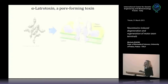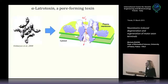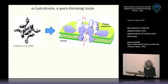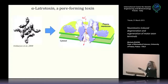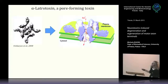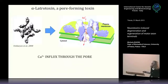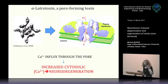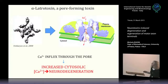Latrotoxin is the main component of the venom of the black widow spider. It is a typical pore-forming toxin that targets the presynaptic nerve terminal and inserts into the lipid bilayer by forming a tetramer. This tetramer makes a pore permeable to cations, resulting in a massive calcium influx within the nerve terminal, which triggers massive neuroexocytosis not followed by retrieval, and ultimately leads to neurodegeneration.